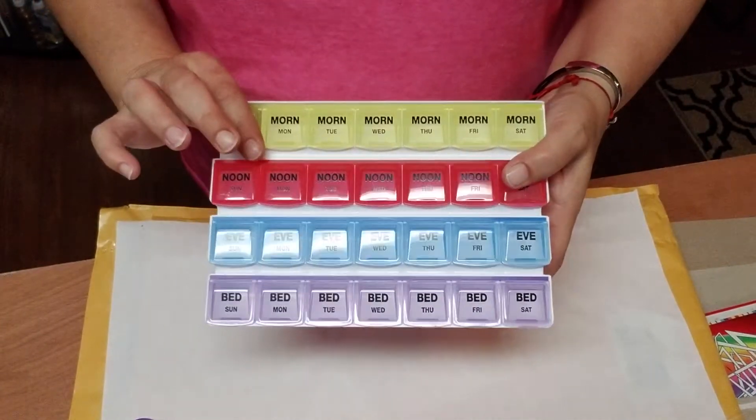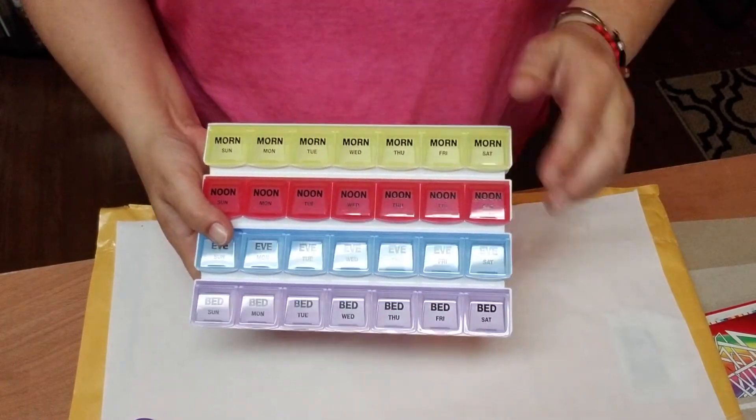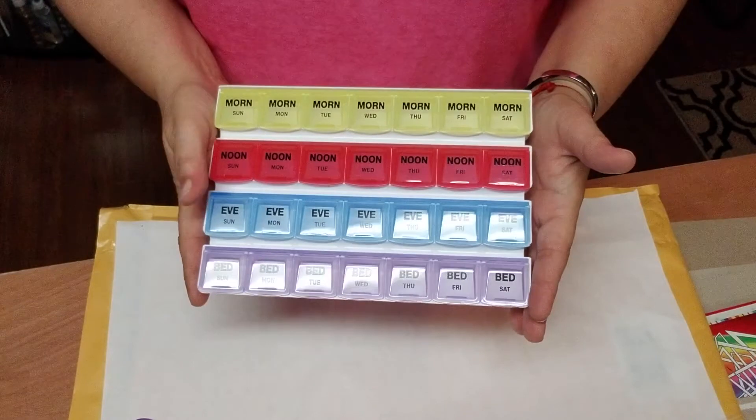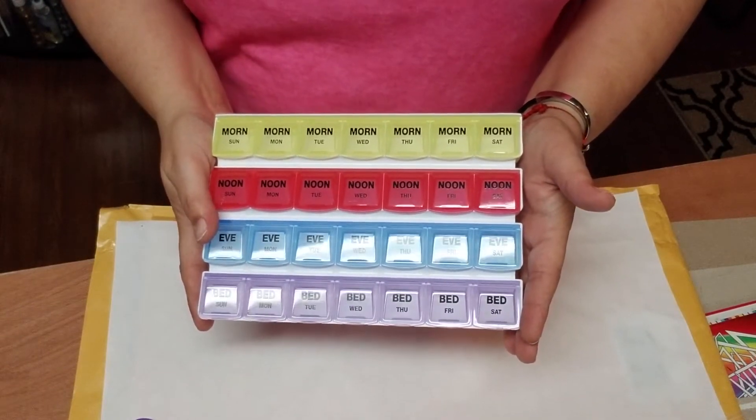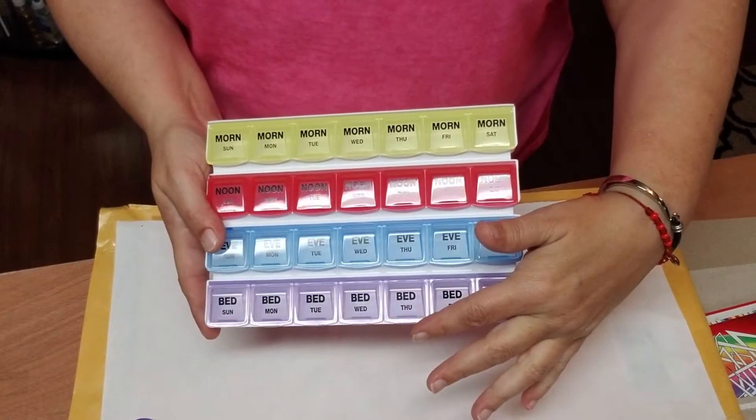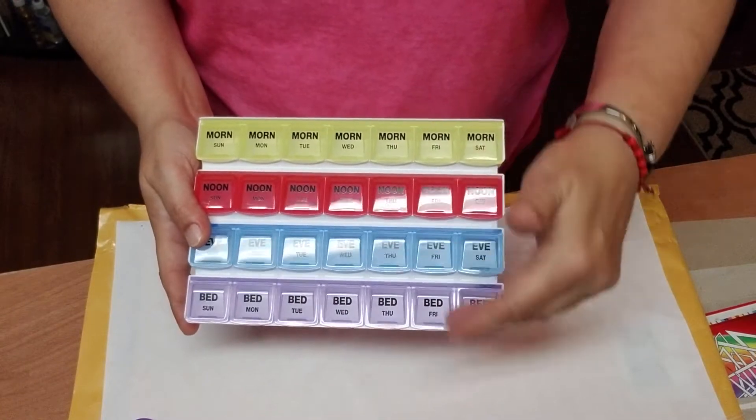What I do like about the color coding is if you have somebody that takes medicine only once a day at the same time, you could use this for a whole month. Yellow for one week, red for another week, and so on.